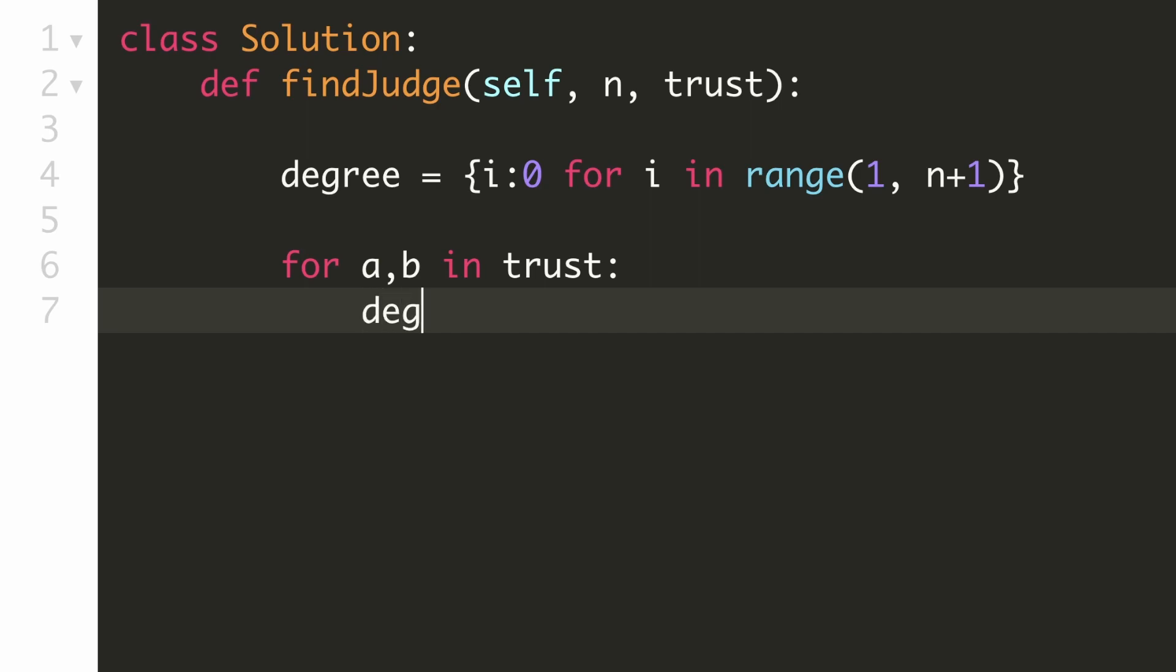Now we will go through all the edges in the trust array. Here person A trusts person B, so there will be an outgoing edge from person A to person B. Hence we will decrease the degree of person A by 1 and increase the degree of person B by 1.